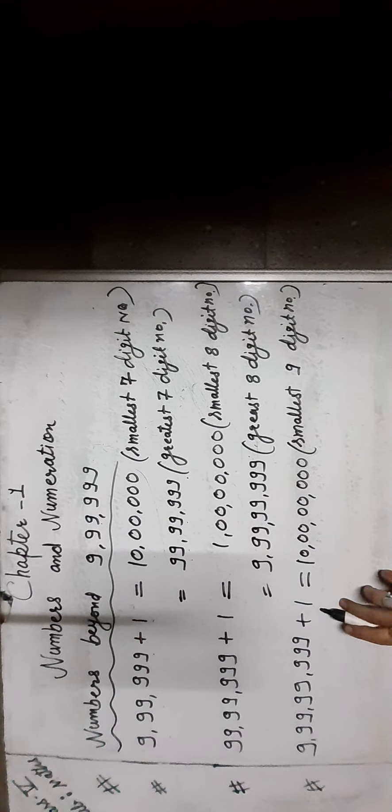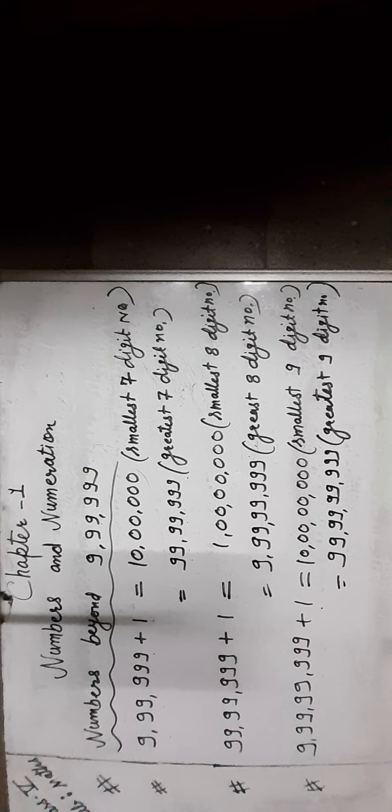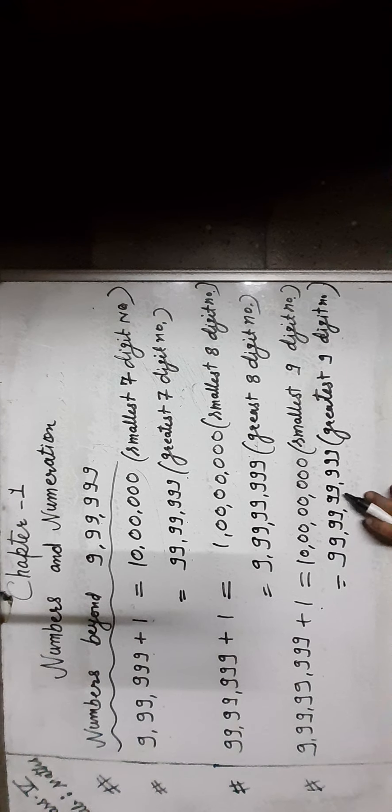If we add 1 to the greatest 8-digit number you will get 10 crore, which is the smallest 9-digit number. The greatest 9-digit number is 99 crore 99,99,999.